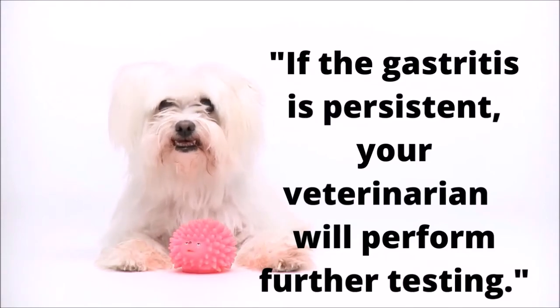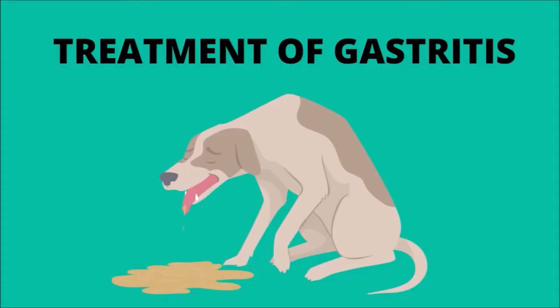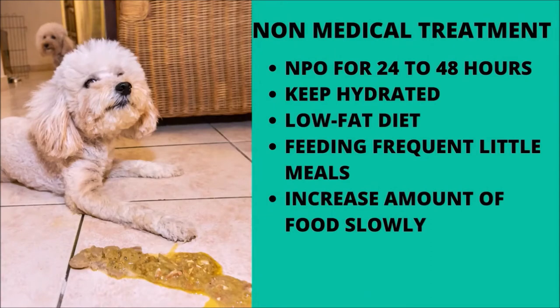The underlying cause determines treatment. The majority of acute cases resolve on their own. Among the non-medical therapy instructions for acute gastritis: abstain from meals during 24 to 48 hours; throughout the first 24 hours, deliver tiny amounts of water periodically. If you cannot give fluids orally without inducing vomiting, seek immediate veterinary treatment. After 24 hours without vomiting, feed a modest amount of a highly digestible, low-fat diet. Re-introduce feeding with frequent little meals, often average daily food divided across four to six meals. Increase the amount of food consumed progressively over the next two to three days. Notify your veterinarian if vomiting returns.